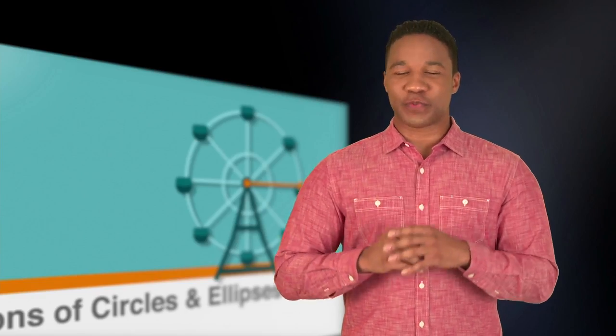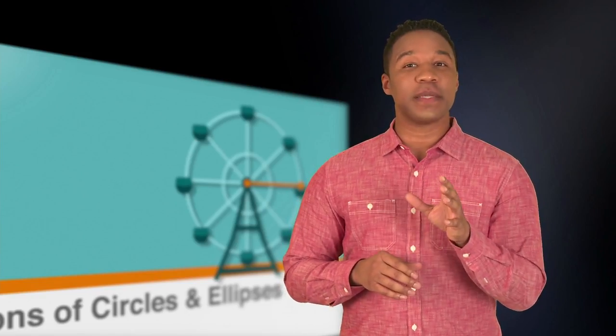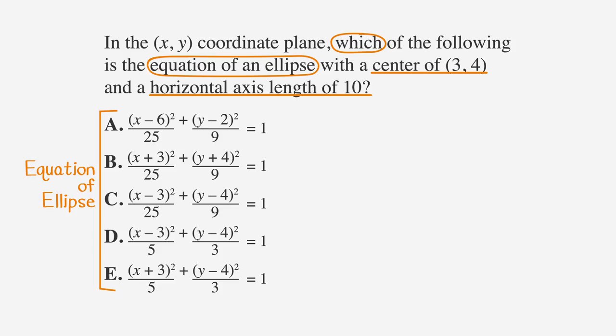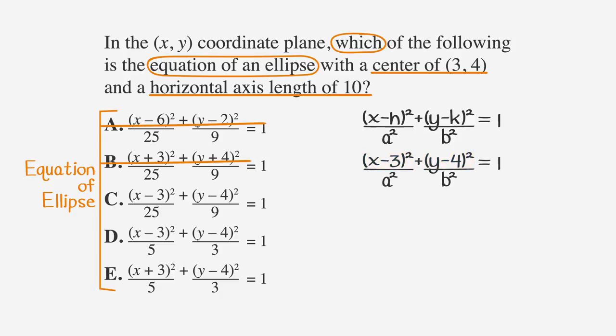The best way to solve this problem is to use process of elimination on our answer choices. Bring in our ellipse equation: x minus h squared over a squared plus y minus k squared over b squared equals 1. Let's start by looking at the center of the ellipse as defined by the problem. h is equal to 3 and k is equal to 4. Based on this, we can eliminate all the answer choices except for C and D, which have numerators of x minus 3 squared and y minus 4 squared.